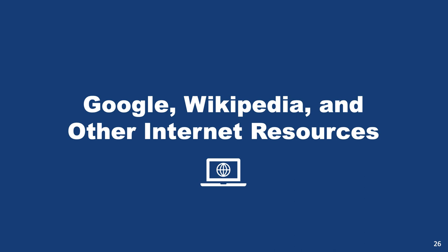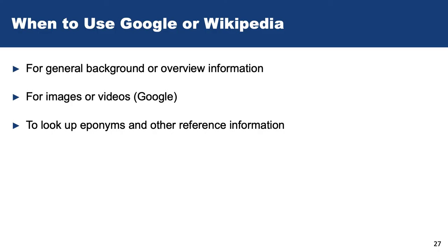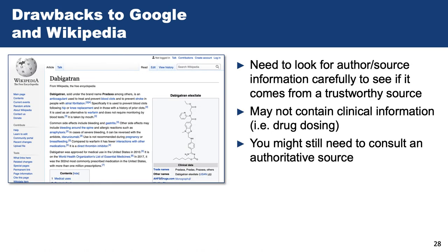Let's briefly talk about Google, Wikipedia, and other internet resources. With so much out there, it's important to know what to use and when. Google and Wikipedia both have their place. For example, they are both useful when you are just getting started learning about a topic and you need general background or overview information. Google can even be helpful in finding medical images, procedure videos, or evidence. When using Google or Wikipedia, it's important to evaluate the information you find and make sure it's credible. Not all information found in Google or Wikipedia is reliable or based on the most current evidence. Most information found by Googling or on Wikipedia is not geared for clinicians — for this reason, you won't find dosing information on the Wikipedia page for a medication.